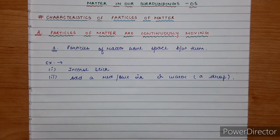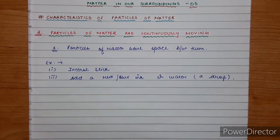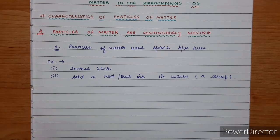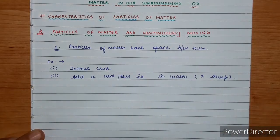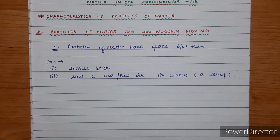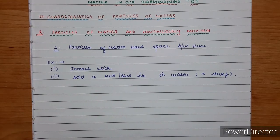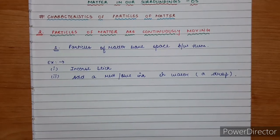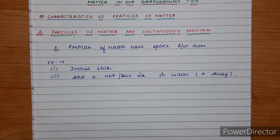हवा भी है, यहाँ से वहाँ चल रही है — so particles of matter are continuously moving। इतने सारे examples इस बात का proof हैं। We can clearly conclude that the particles of matter are continuously moving। Chemistry is full of observations — you cannot see the particles exactly moving। यह observations और examples ही हैं जिससे हम scientific बातें deep inside the atom या the matter पता लगाते हैं। यह सिर्फ observations हैं, उनके basis पे हम matter की characteristics पता करते हैं।